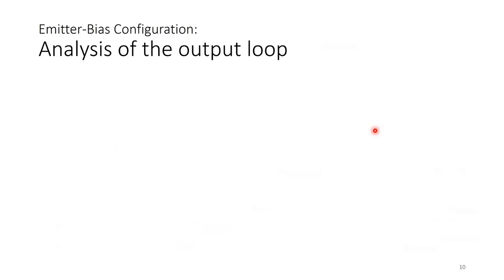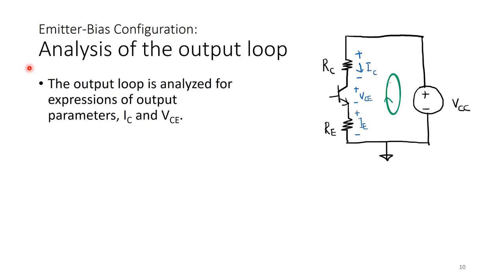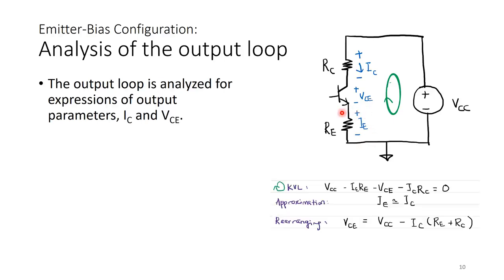Analysis of the output loop: we have finished the input loop and will now look at the output loop, which gives expressions for the output parameters IC and VCE. Compared to the fixed bias, we now have an added RE in the loop.